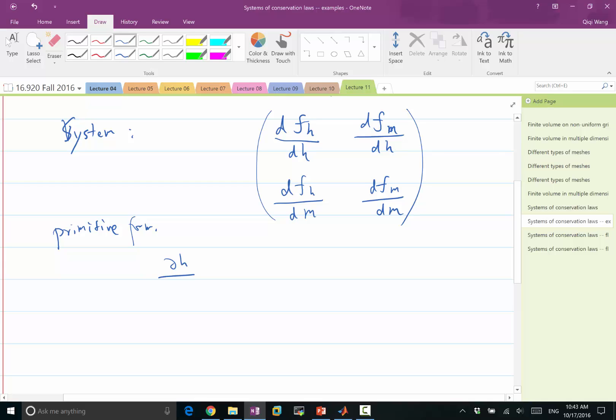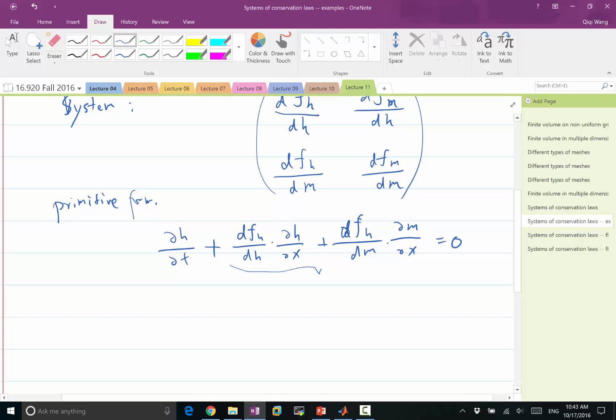We get partial H partial T plus the divergence, or sorry, the dFH/dx can be written as dFH/dH times partial H partial X, plus dFH/dM times partial M partial X, equal to zero, right? So this is just the expansion of partial FH partial X, and partial M partial T, plus dFM/dH times partial H partial X, plus dFM/dM times partial M partial X, equal to zero.